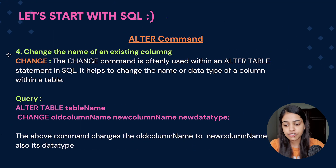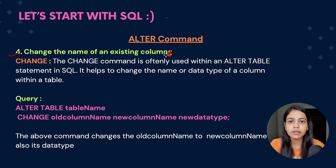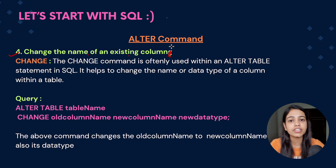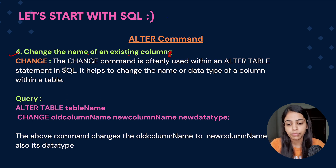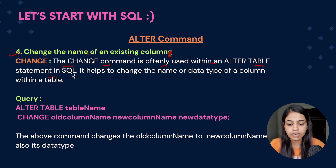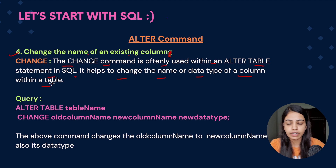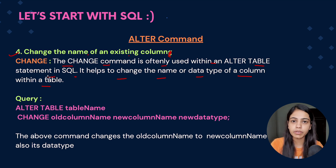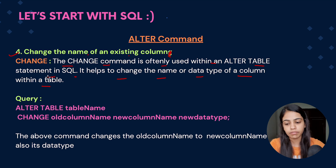Now the fourth use case is changing the name of an existing column. In the earlier use case we saw how we can change the data type of a column — in this use case we will see how we can change the name of that particular column. The CHANGE command is often used with an ALTER TABLE statement in SQL. It helps us change the name or data type of a column within a table.